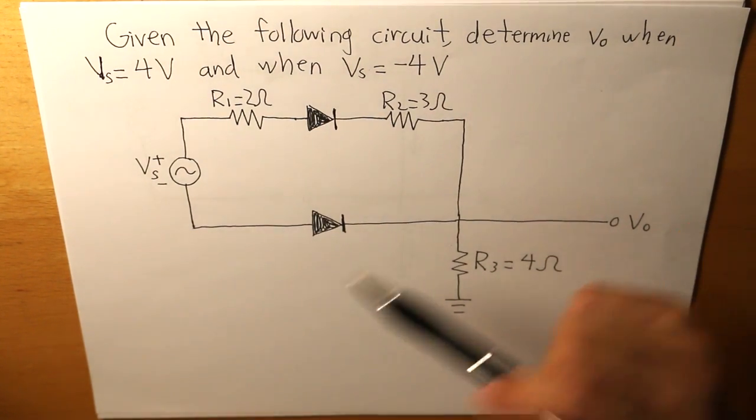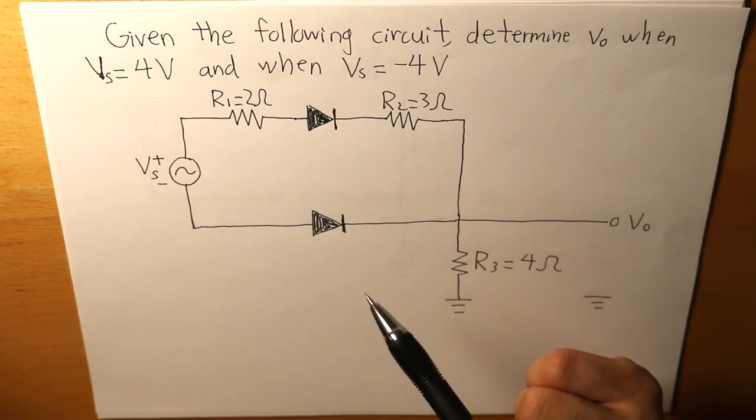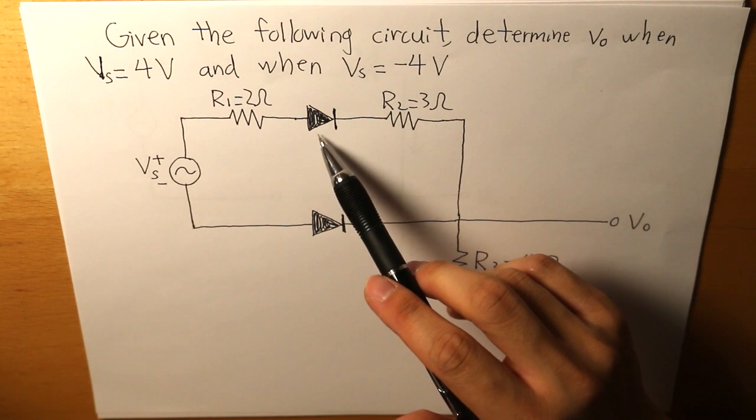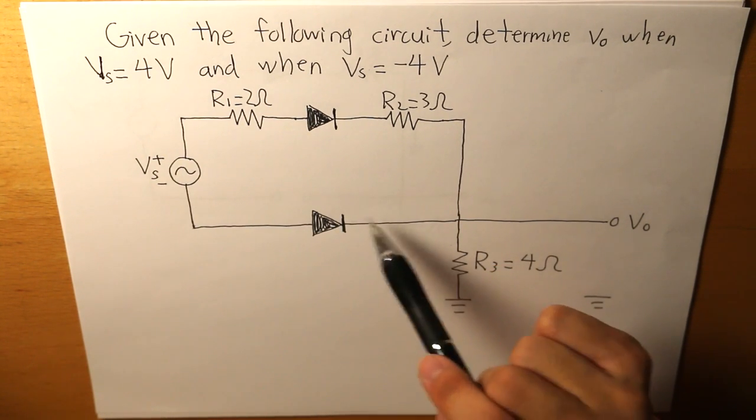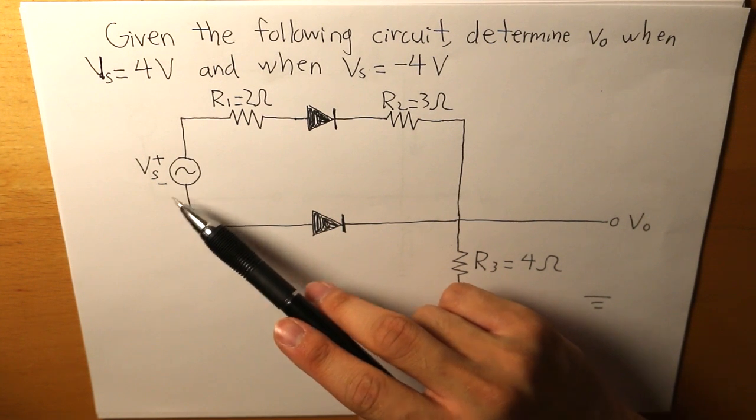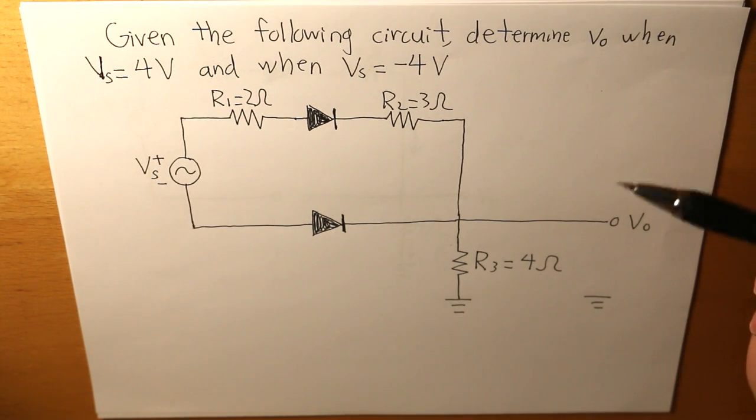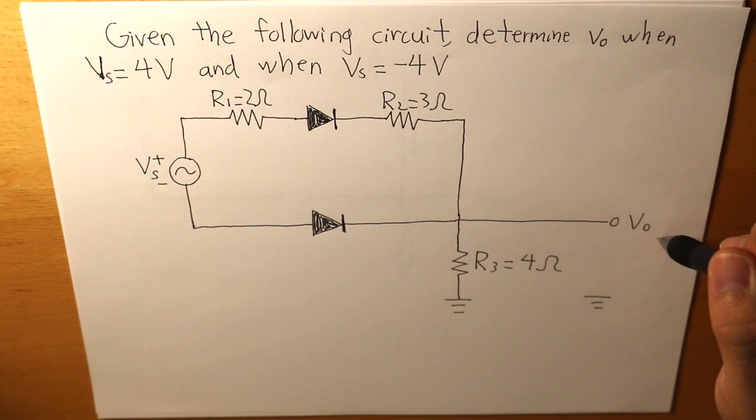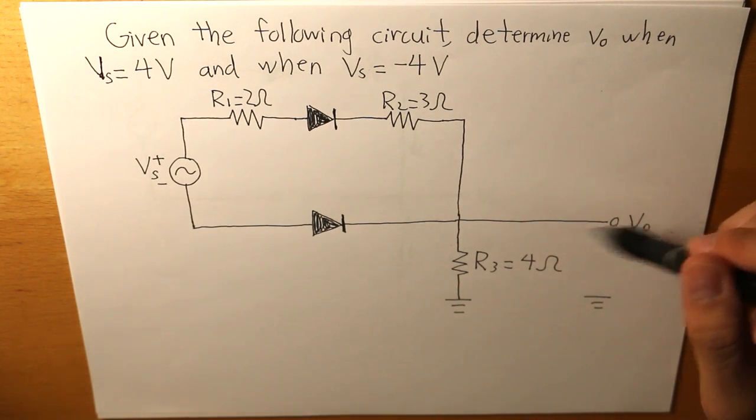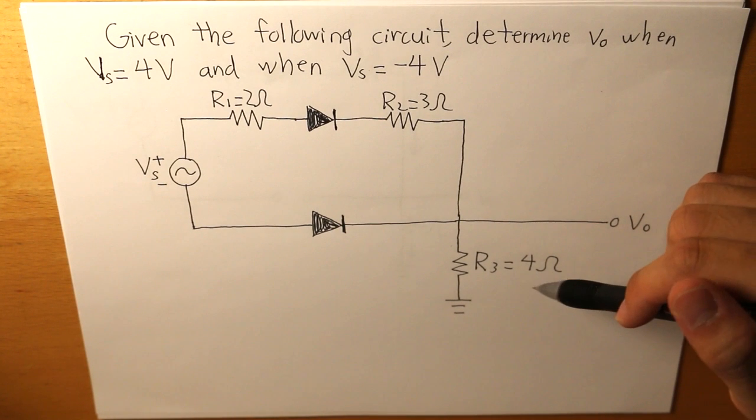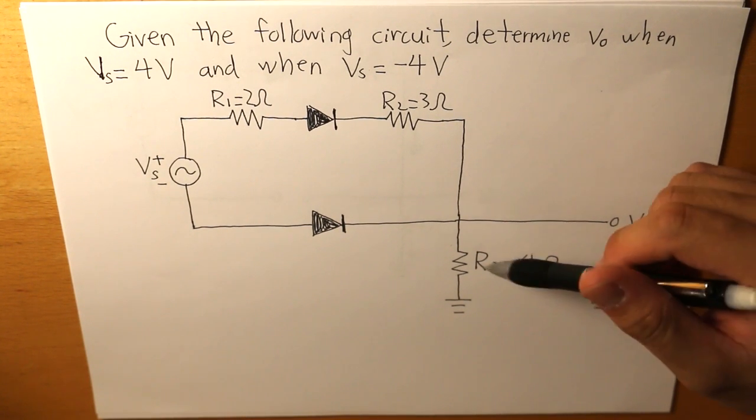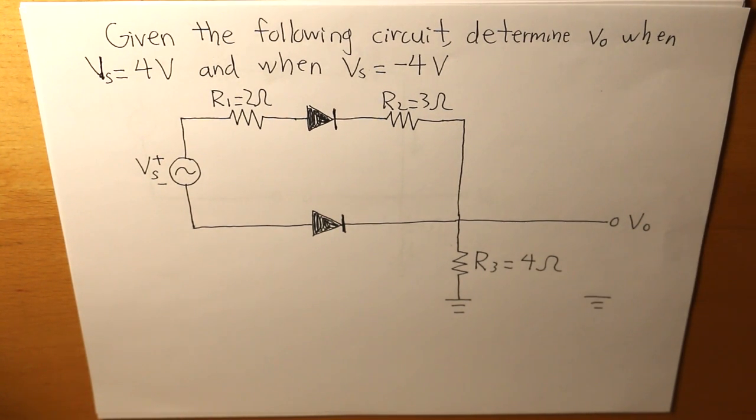And in this circuit, as we can see, we have two diodes, one diode connected to the positive terminal of the voltage source and also another diode connected to the negative terminal of the voltage source. And the output voltage is where R3 is. R3 is 4 ohms and R3 can also be considered as the load.